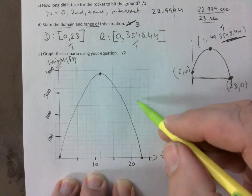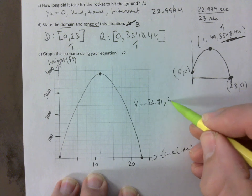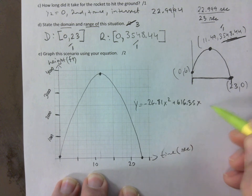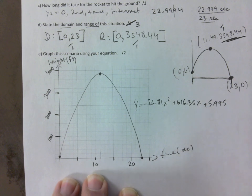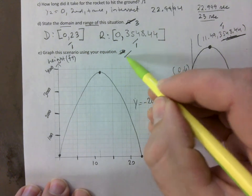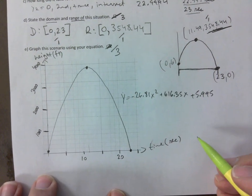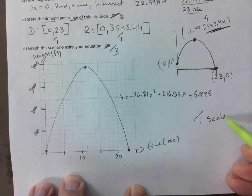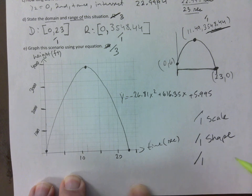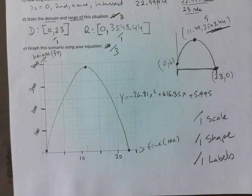You guys do rocket experiments in physics? That would be fun, wouldn't it? You should suggest that. Just don't say that I give you the idea. So, I'm going to make this 3, not 2. I'm going to make this 3. So, again, if you want to write this down, 1 is for the scale, 1 is for the shape, and 1 is for labels. That's how I will mark every single graph.